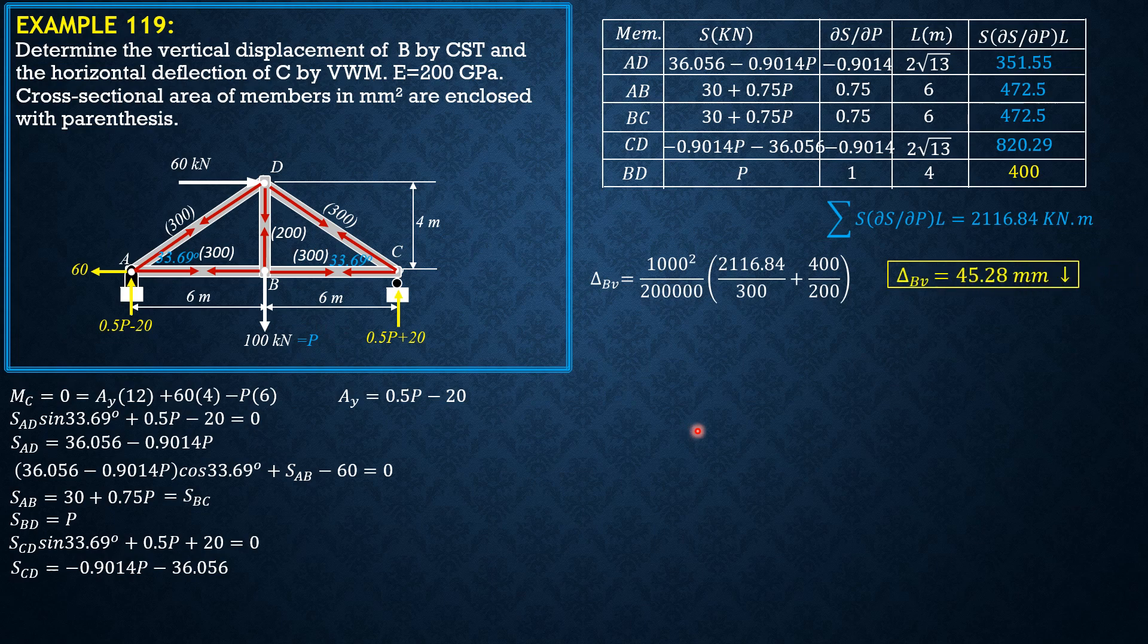So the vertical displacement at B is 45.28 mm downward. Next by virtual work method for the horizontal displacement at C.